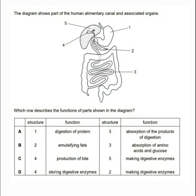The question says the diagram below shows part of the human alimentary canal and associated organs. We have organs 1, 2, 3, 4, and 5, and you must be able to identify and know them.